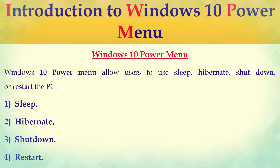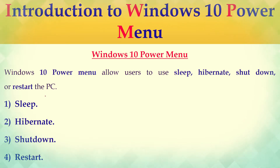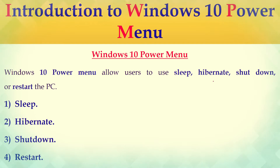So what is the Windows 10 Power Menu? Windows 10 Power Menu allows users to use sleep, hibernate, shut down, and restart the PC. We are going to see each one of them.